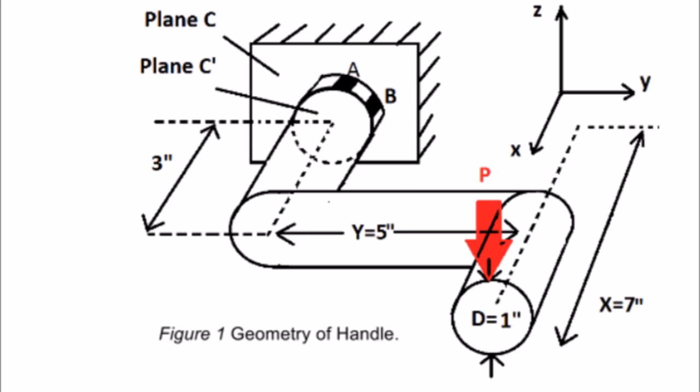For the stress analysis, it was determined that the most vulnerable location for failure was at the handle base, which is subjected to bending, torsion, and transverse loading. Two stress elements were selected to be analyzed, one of which was located on top of the handle and the other on the side.